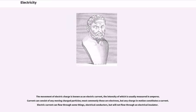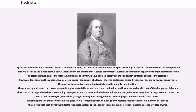The movement of electric charge is known as an electric current, the intensity of which is usually measured in amperes. Current can consist of any moving charged particles; most commonly these are electrons, but any charge in motion constitutes a current. Electric current can flow through some things, electrical conductors, but will not flow through an electrical insulator. By historical convention, a positive current is defined as having the same direction of flow as any positive charge it contains, or to flow from the most positive part of a circuit to the most negative part. Current defined in this manner is called conventional current. The motion of negatively charged electrons around an electric circuit is thus deemed positive in the opposite direction to that of the electrons. However, depending on the conditions, an electric current can consist of a flow of charged particles in either direction, or even in both directions at once. The positive to negative convention is widely used to simplify this situation.